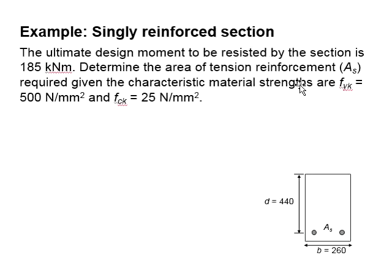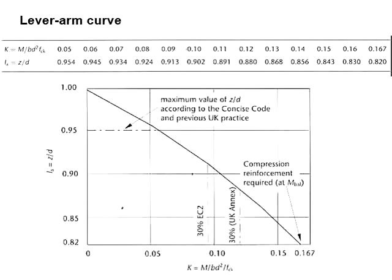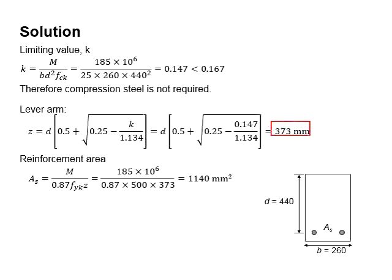Next, you calculate the reinforcement area required within the section. Substitute the relevant values into the equations. You obtain 1140 mm² of reinforcement bar.